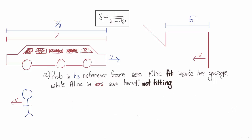That leaves us with answer A. Bob, in his reference frame, sees Alice fit inside the garage, while Alice sees herself as not fitting. But didn't we say in the previous section that outcomes of experiments can't be relative?